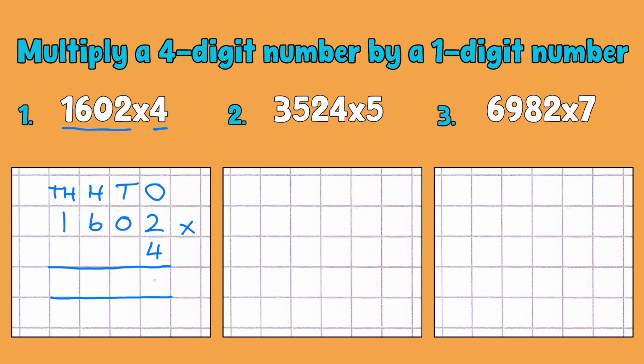So 2 multiplied by 4 is 8. And then I move on to the tens number. Nothing multiplied by 4 is nothing. And then 6 multiplied by 4, or 600 multiplied by 4, is 24. But that is actually 2,400 if you can see from your place value headings there.